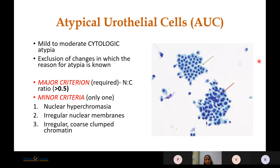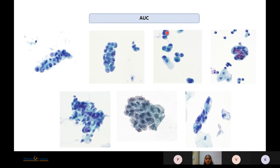The next category is Atypical Urothelial Cells, which have mild to moderate cytologic atypia. The major required criterion is a high NC ratio greater than 0.5 — meaning more than 50% of cell volume occupied by nucleus — and at least one minor criterion must be fulfilled: nuclear hyperchromasia, irregular nuclear membranes, or irregular coarse clumped chromatin. Cells with nucleomegaly and irregular nuclear contours fulfilling one major and one minor criterion are labeled as atypical urothelial cells.